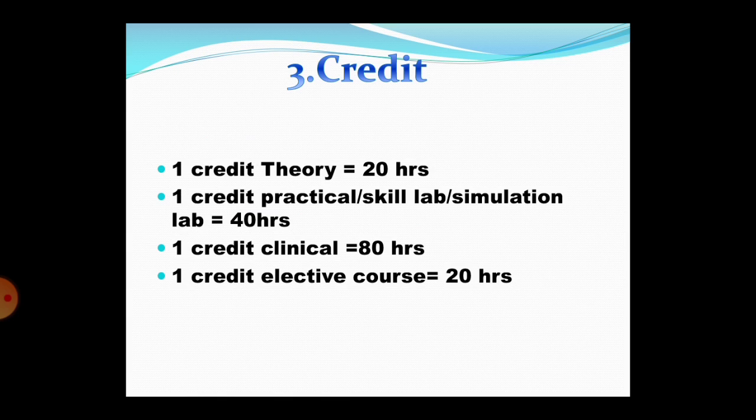The third difference is a credit system. One credit means 20 hours for theory. For practicals, one credit means 40 hours. For clinical, one credit means 80 hours. For elective courses, one credit means 20 hours.